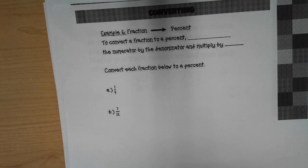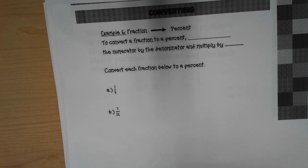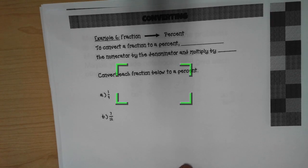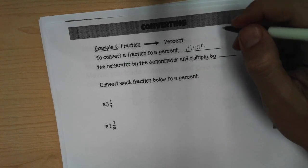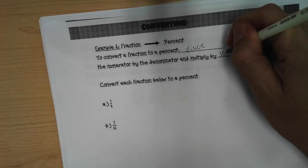A fraction to a percent. To convert a fraction to a percent, blank the numerator by the denominator and multiply by blank. We will divide the numerator by the denominator and multiply by a hundred.